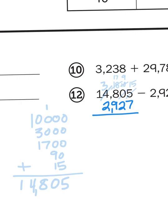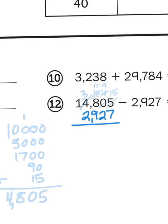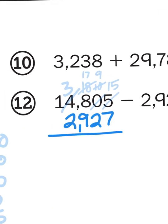So now all there's left to do is the subtraction. 15 minus 7 is 8. 9 minus 2 is 7. 17 minus 9 is 8. 3 minus 2 is 1. And 1 minus nothing is 1. So, my answer is 11,878.